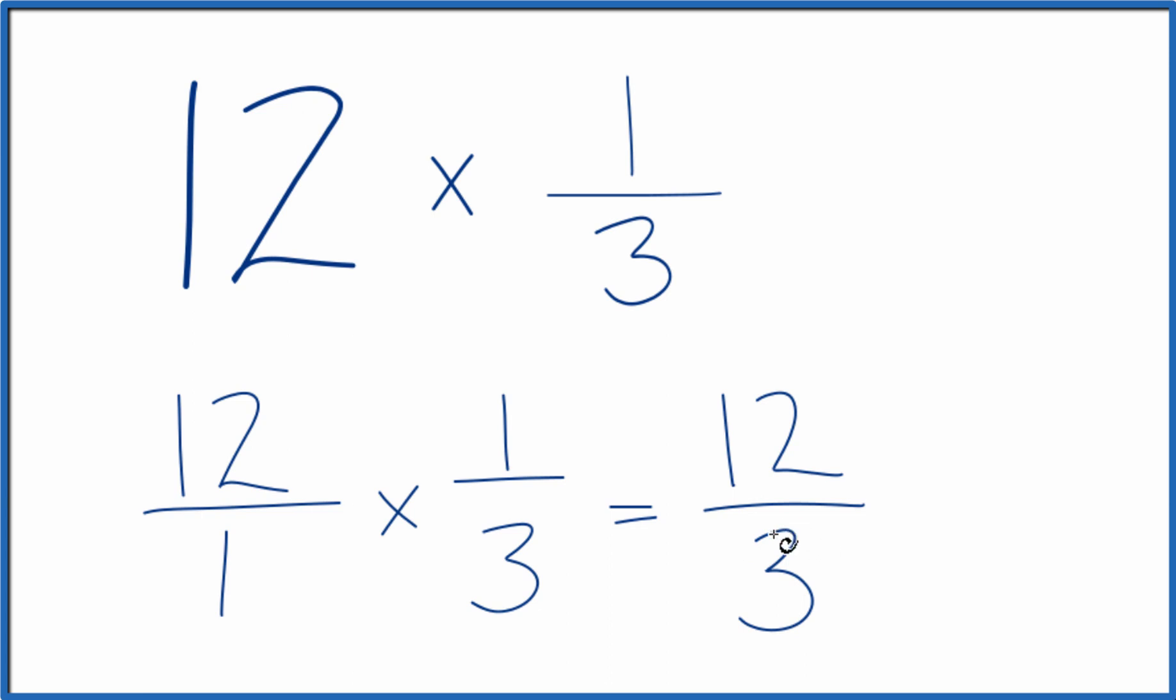But we can simplify this. 3 goes into 12 four times. So in answer to our question, 12 times one-third, that equals 4.